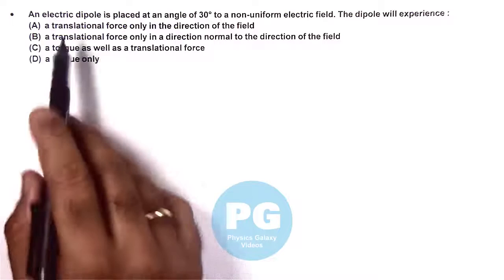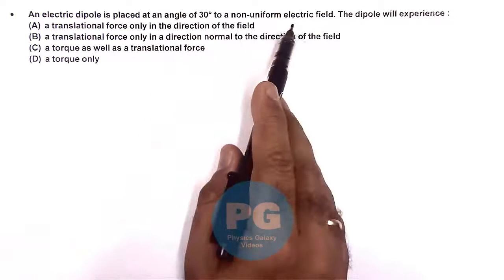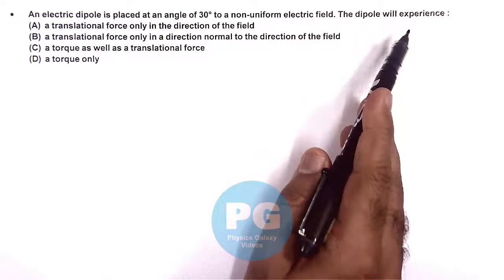In this question it is saying an electric dipole is placed at an angle 30 degrees to a non-uniform electric field. Then the dipole will experience what?